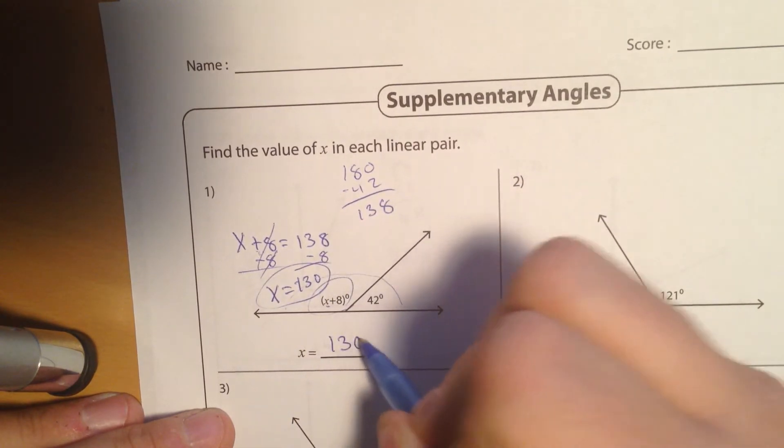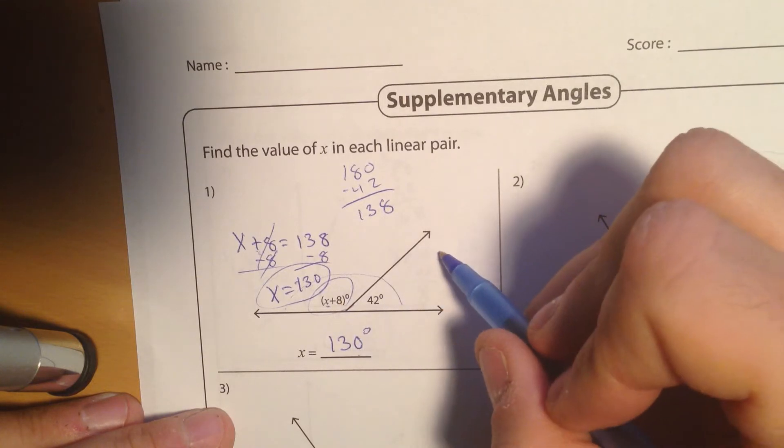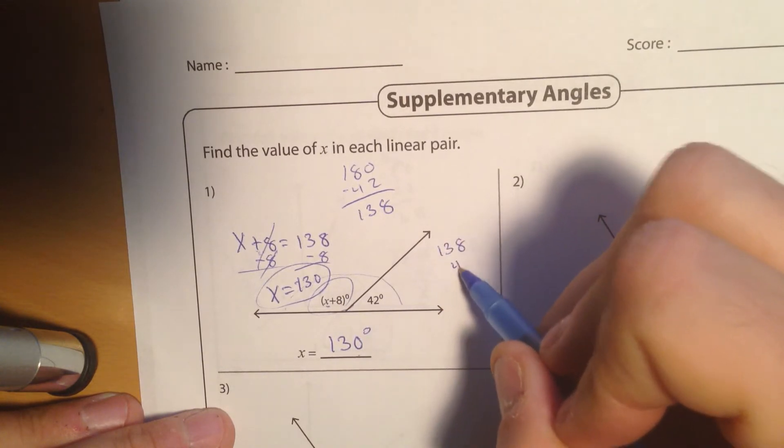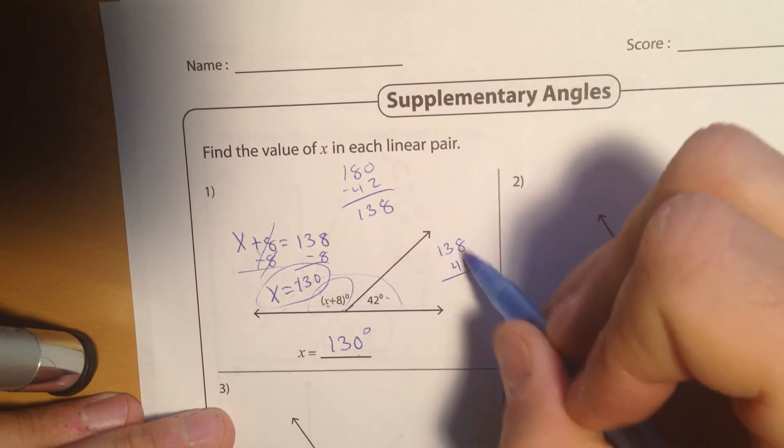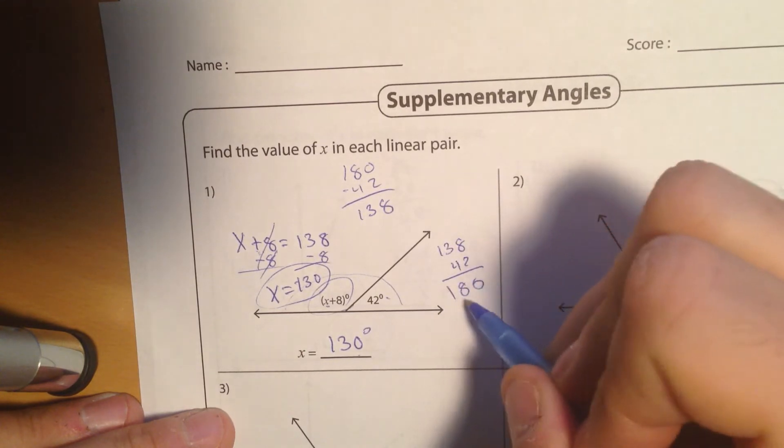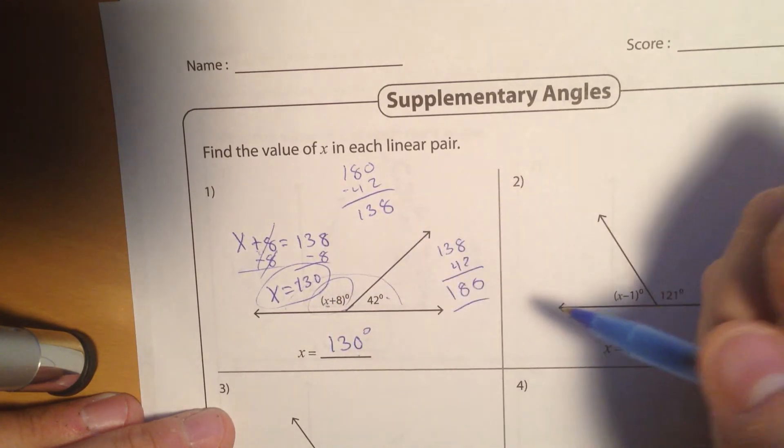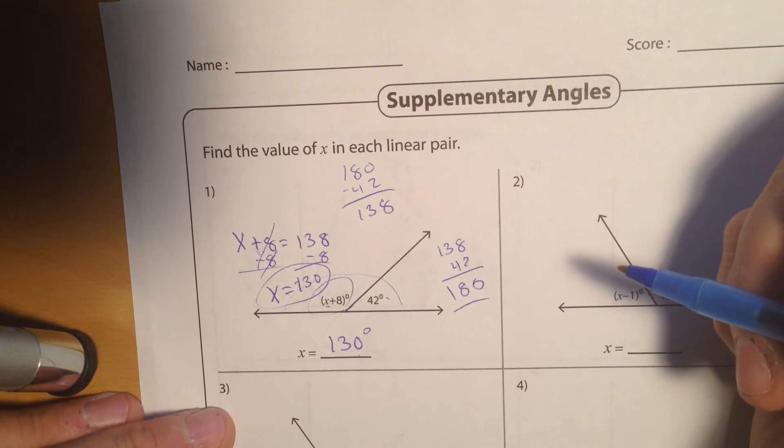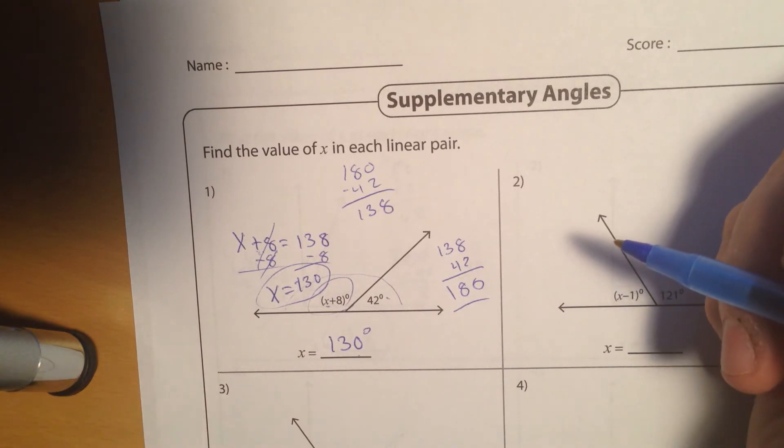So x has to be 130 degrees. Now check it. 130 degrees plus 8 is 138, plus 42 over here. And so I get 10, 7, 8, 180 degrees. A straight angle. And it works. Good luck with this tonight.